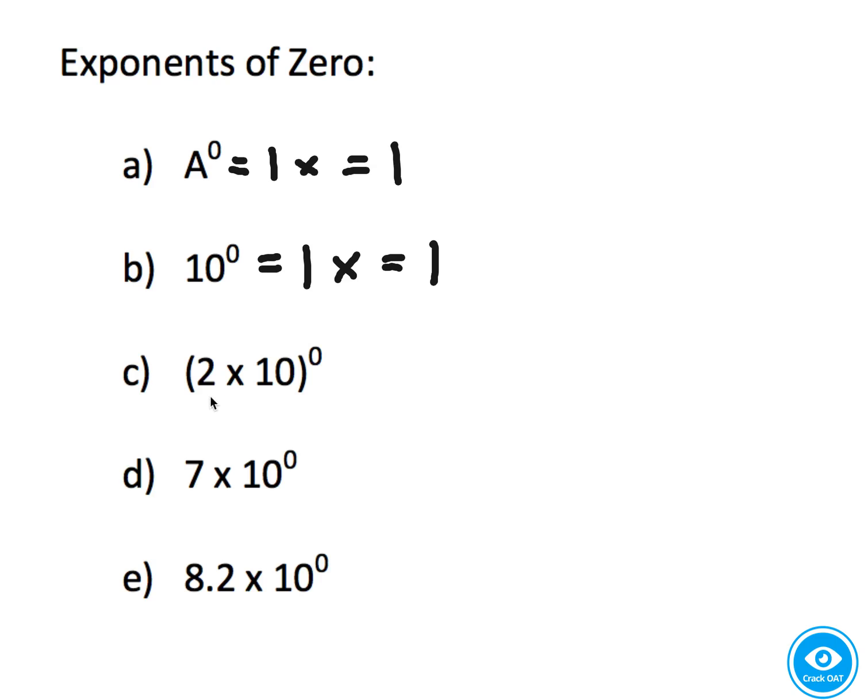Here's an interesting problem: 2 times 10, notice the parentheses, the whole thing to the 0th power. So it's 1 times none of these because of the parentheses. So the answer is 1.